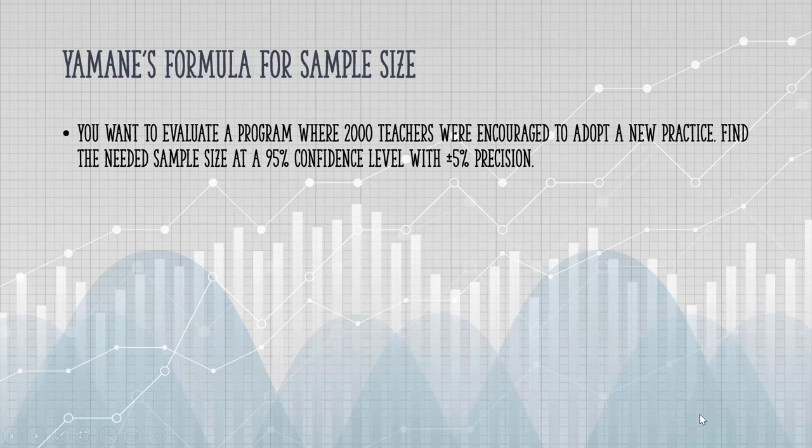Yamane's formula is a simple formula to find a sample size for proportions. Let's say we wanted to evaluate a program where 2,000 teachers were encouraged to adopt a new practice. We want to find a sample size for a 95% confidence level with 5% precision.